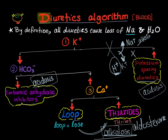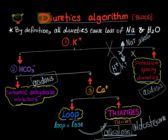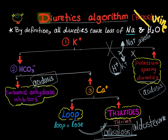Hello, welcome. In the previous video we talked about the diuretics algorithm by looking at electrolytes in the blood. Today we'll talk about electrolytes in the urine. The only thing is that we will change all the arrows to the opposite.